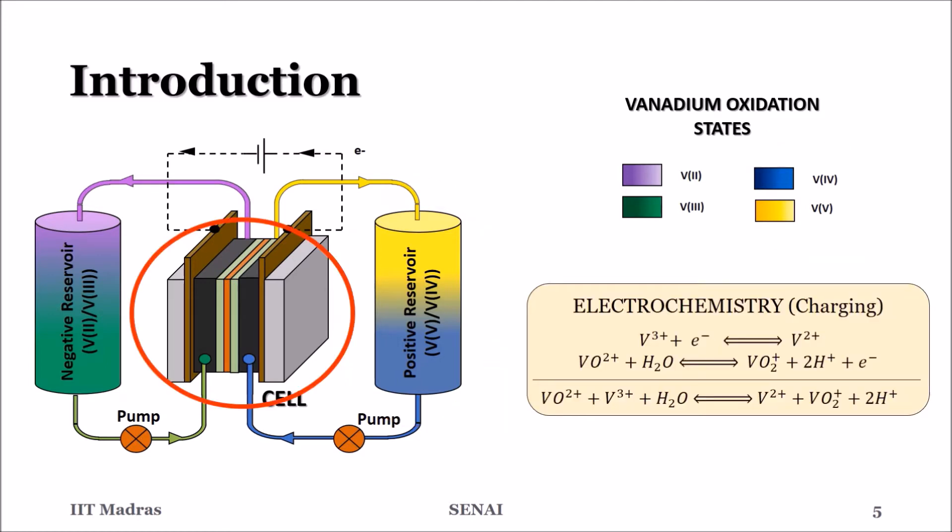Charging is carried out by applying external potential to the cell during which V3 is converted to V2 and V4 is converted to V5 in the respective electrodes.